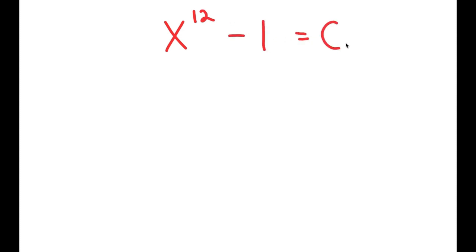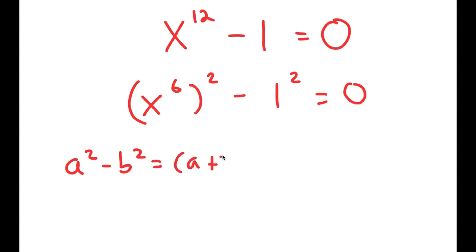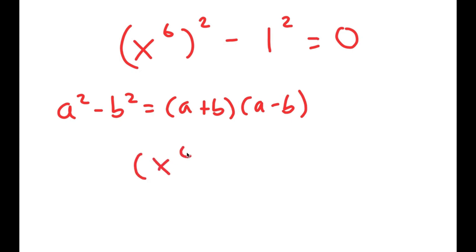In this video, I'm going to solve the equation x to the power of 12 minus 1 is equal to 0. To solve this, I'm going to first rewrite this as x to the power of 6, squared, minus 1 squared is equal to 0. The reason I'm doing this is so I can use the property a squared minus b squared equals a plus b times a minus b. So this turns into x to the power of 6 plus 1 times x to the power of 6 minus 1 is equal to 0.